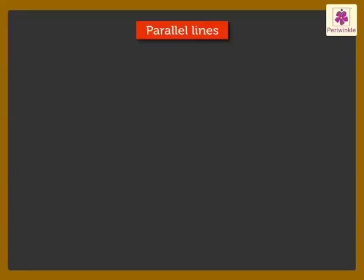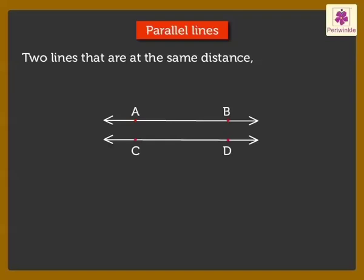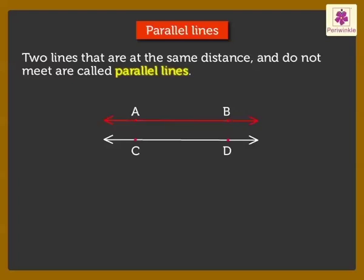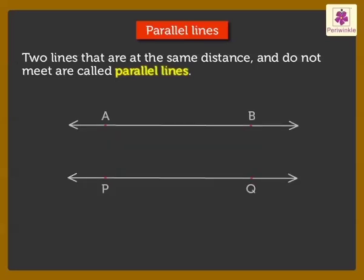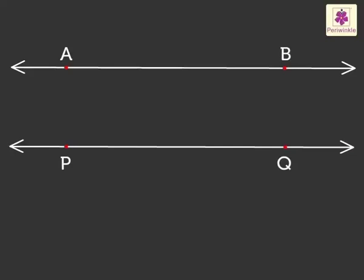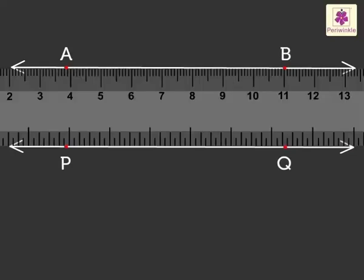Coming to parallel lines. Two lines that are at the same distance and do not meet are called parallel lines. Here line AB and line CD are parallel lines. We read it as line AB is parallel to line CD. Kids, look here, two lines drawn on either side of a ruler are parallel lines.